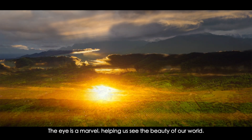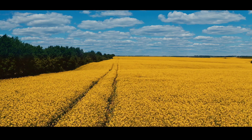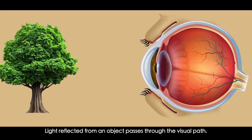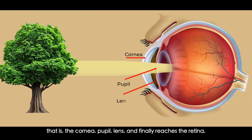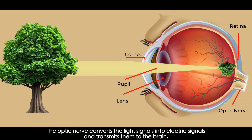The eye is a marvel, helping us see the beauty of our world. Light reflected from an object passes through the visual path — the cornea, pupil, and lens — finally reaching the retina, the light-sensitive layer at the back of the eye. The optic nerve converts the light signals into electric signals and transmits them to the brain.